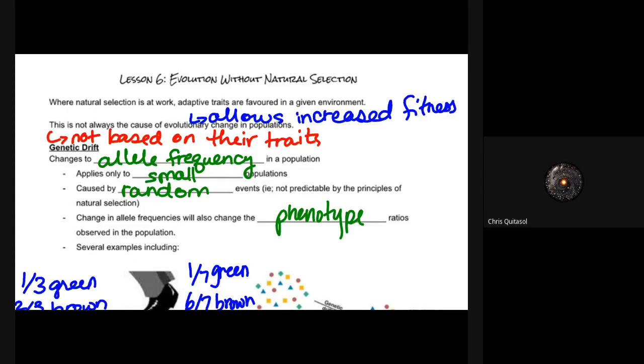I think it's an important lesson to connect these things, but I'm not going to spend too much time on it. Looking at adaptive traits, they are favored in a given environment which allows for an increase in fitness. But it's not always because of evolutionary changes in populations—it's not necessarily always based on traits. There are several factors that contribute to evolution without natural selection, and the first one is genetic drift.